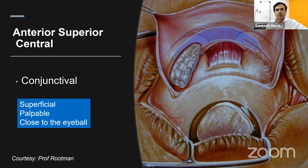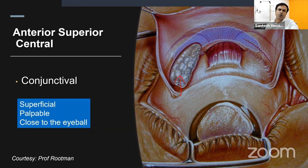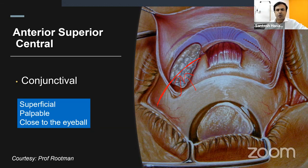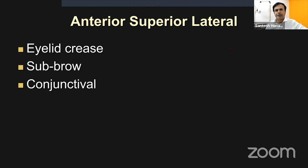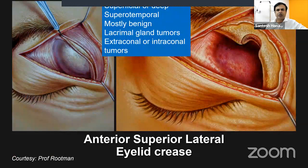For anterior superior central, the transconjunctival incision is for lesions close to the eyeball — for example, an orbital lymphoma with an extension into the superior fornix, or a dermolipoma in the supratemporal zone. For anterior superior lateral, the lid crease incision is excellent for lacrimal gland tumors and extraconal or intraconal tumors — it is very versatile, used in about 40–50% of all orbitotomies.